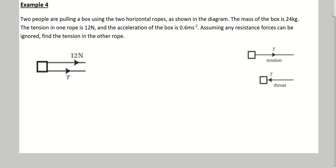In example four, we've been told two people are pulling a box using two horizontal ropes, as shown in this diagram here. The mass of the box is 24 kilograms, the tension in one rope is 12, and the acceleration of the box is 0.6. Assuming any resistance forces can be ignored, find the tension in the other rope.